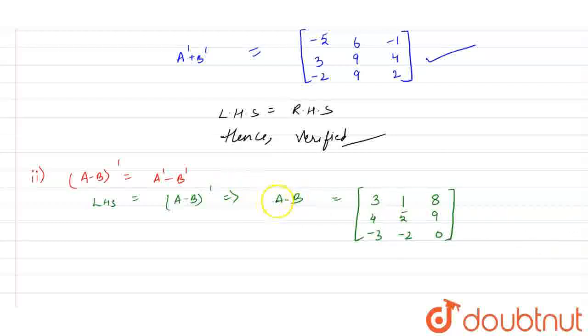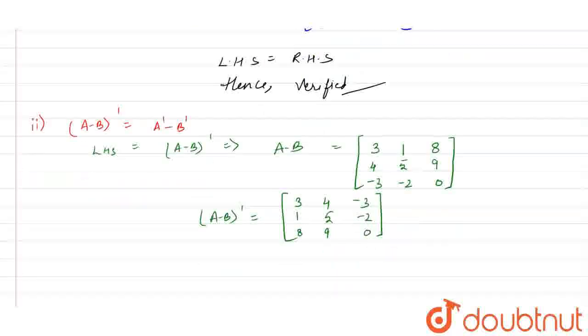So now, we need to find out the transpose for this matrix. So it will be 3, 1, 8 will act as a column. 4, 5, 9. 4, 5, 9, minus 3, minus 2, 0. Now we have got our LHS, let us calculate the RHS.